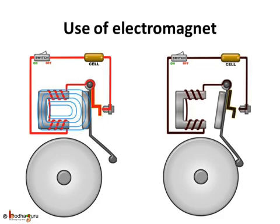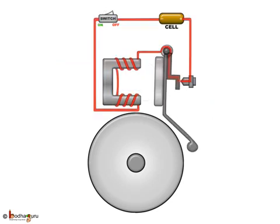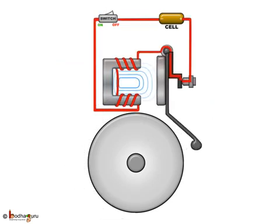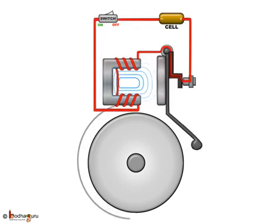Using this electromagnet, we created the movement of the clapper to ring the bell. With the current flow, the electromagnet attracted the clapper, ringing the bell.